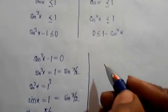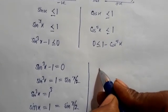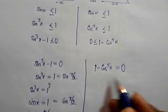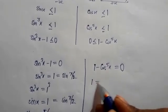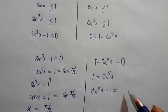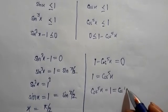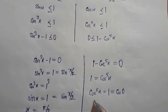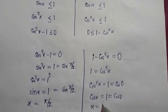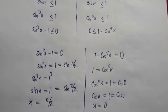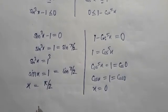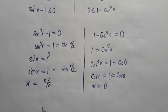The second case: 1 - cos⁵x = 0, so cos⁵x = 1, which means cos x = 1. Since cos 0 = 1, we get x = 0. We can also add 2π, so x = 2π is also a solution. These two results, x = π/2 and x = 0 (or 2π), are the values satisfying the original equation.